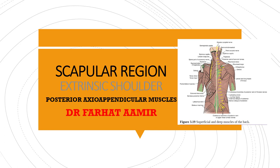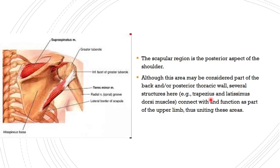Today we will cover a new topic: the scapular region, or the posterior axio-appendicular skeleton — those muscles present posteriorly on the posterior thoracic wall that connect the axial skeleton to the appendicular skeleton posteriorly. They are included in the extrinsic shoulder muscles. Structures such as the trapezius and latissimus dorsi connect with and function as part of the upper limb, uniting these areas.